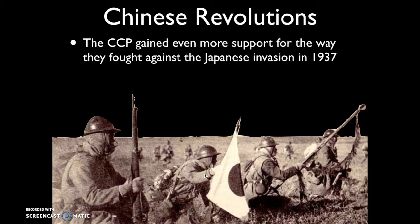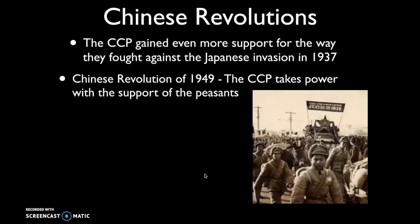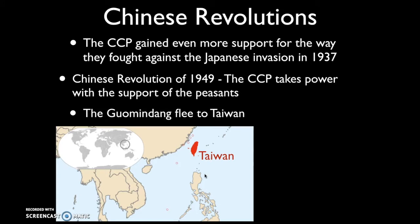In 1937, the Japanese invade China in a brutal invasion that involves the Rape of Nanjing. The Guomindang had power at the time but did not do a very good job of fighting the Japanese. Many Chinese perceived them as spending more time trying to defeat the CCP than the invading Japanese. Meanwhile, the CCP were far more successful in the rural parts of China at stopping the Japanese invasion. With the end of World War II in 1945 and the defeat of Japan, four years later in 1949 the Chinese Communist Party rises to power.